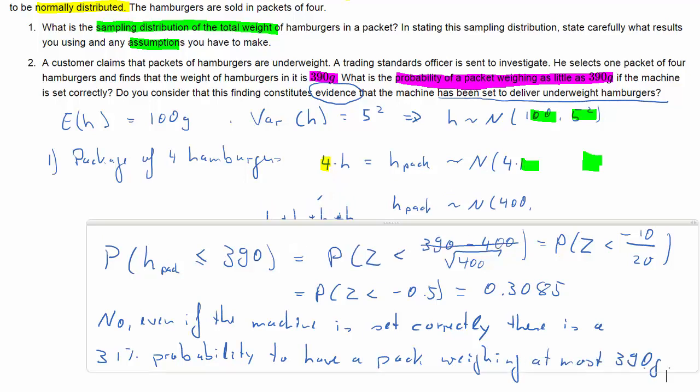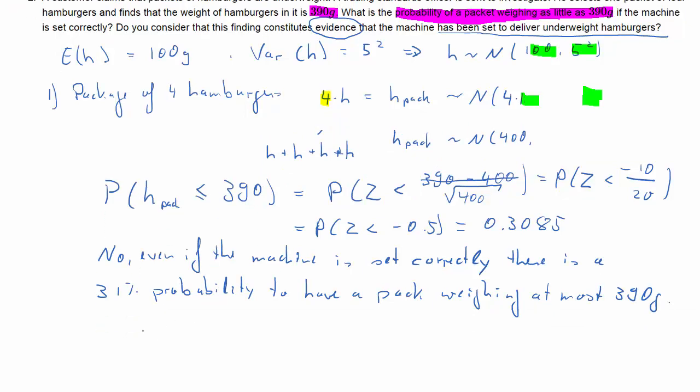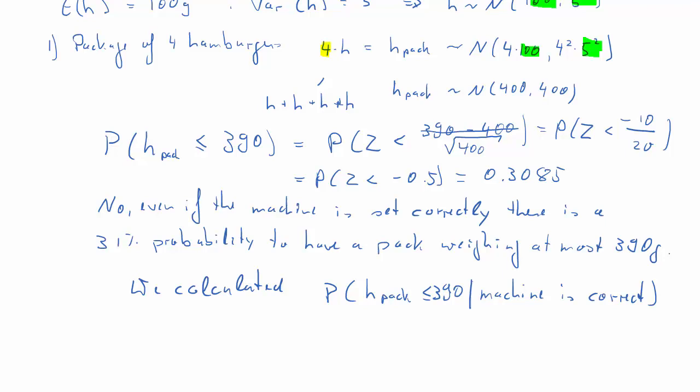But we need to be just a little bit careful when we answer a question like this. It says is the evidence that the machine has been set to deliver underweight hamburgers. So what we calculated, the probability, was really the probability that H_pack was smaller than 390 but really assuming that the machine was correctly calibrated. The machine was correctly calibrated, so we assumed that the machine followed the above distribution of on average producing patties that weigh 100 grams.